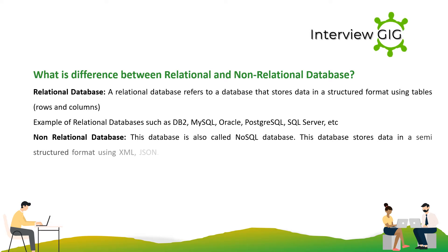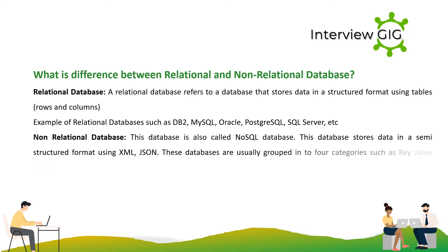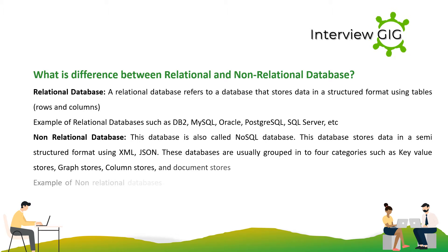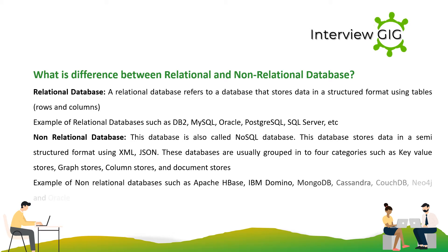A non-relational database is also called a NoSQL database. It stores data in a semi-structured format using XML, JSON. These databases are usually grouped into 4 categories: Key-Value Stores, Graph Stores, Column Stores, and Document Stores. Examples include Apache HBase, IBM Domino, MongoDB, Cassandra, CouchDB, Neo4j, and Oracle NoSQL database, etc.